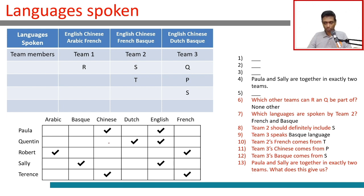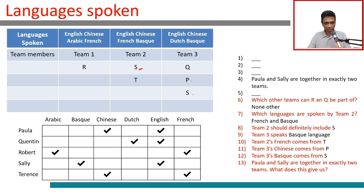Paula and Sally are together in exactly 2 teams. Team 2 already has Sally. We need to identify which 2 teams have both Paula and Sally. Paula brings Chinese and English; Sally brings Basque and English — together giving Basque, Chinese, and English. So teams 2 and 3 must be the ones containing both Paula and Sally. Therefore Paula is in team 2 as the third member there.